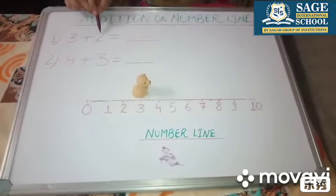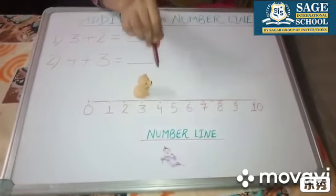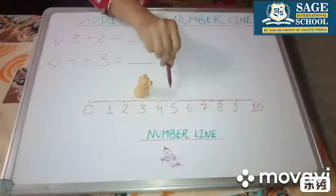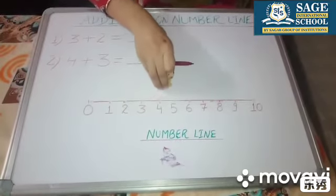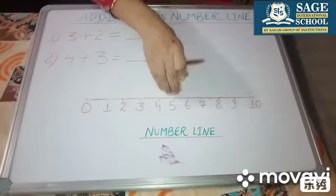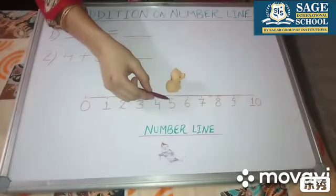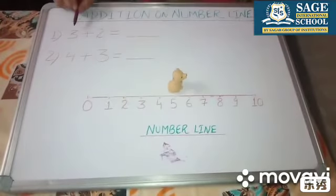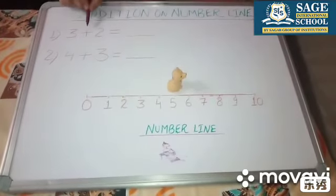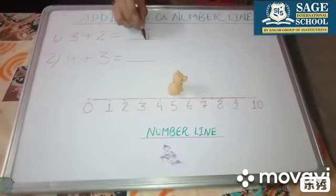Now we want to add two more to three, so the dog will move two more steps: three to four and four to five. Now what is the number? The number is five. So three plus two equals five.